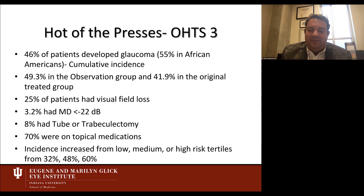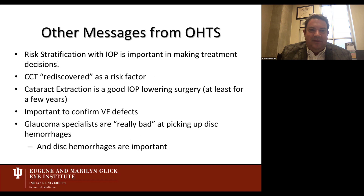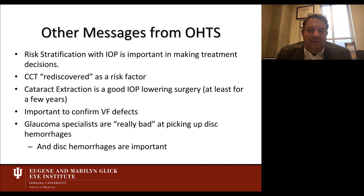The incidence of developing glaucoma increased as risk factors mounted — patients at higher risk tended to have higher rates of primary open-angle glaucoma development. Key OHTS take-home messages include: risk stratification is very important. Thin central corneal thickness underestimates eye pressure — this was actually published before OHTS but was rediscovered as an independent risk factor. Thin CCT is a risk factor for development of primary open-angle glaucoma.